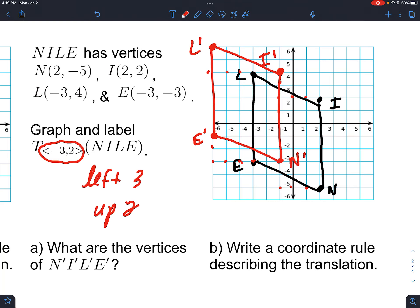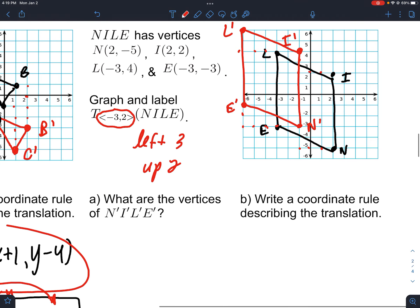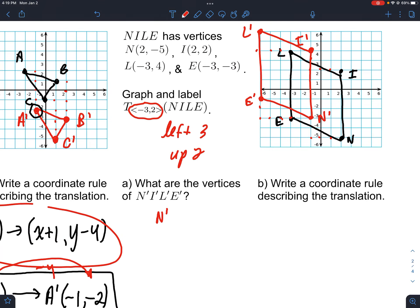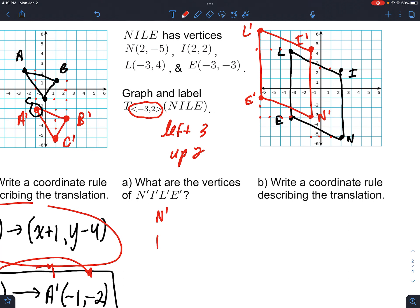You can see the vertices. I'm going to list them, but I want you to go between the picture and the points I'm writing down. N prime is at negative 1, negative 3. I prime is negative 1, 4. L prime is negative 6, 6 in the corner, and E prime is negative 6, negative 1. Those are the four points that have been transformed, translated really.